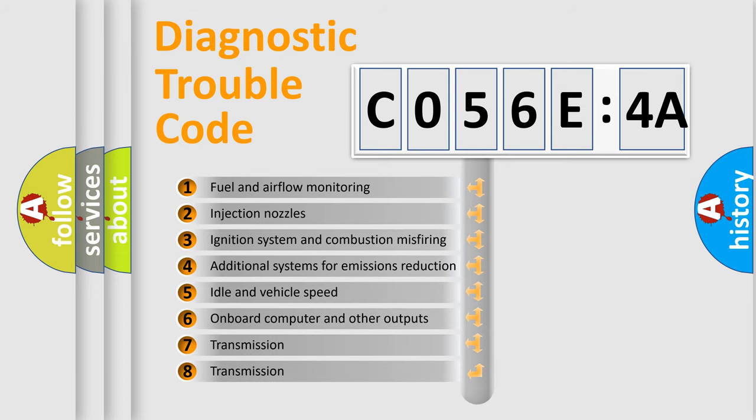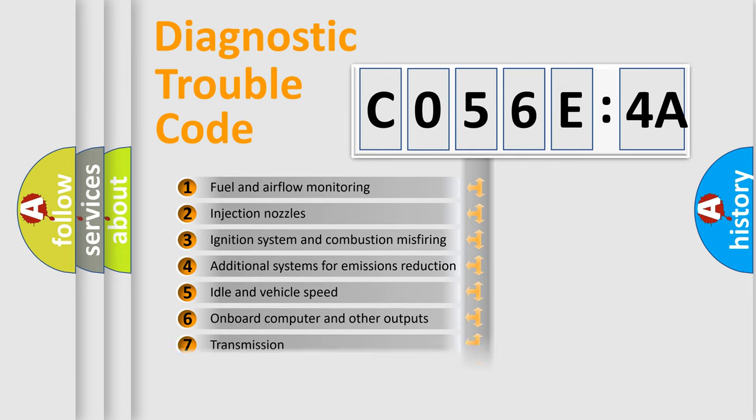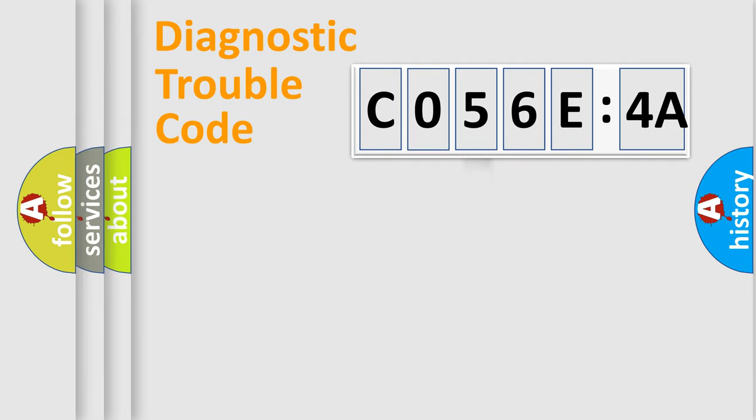The third character specifies a subset of errors. The distribution shown is valid only for the standardized DTC code. Only the last two characters define the specific fault of the group.